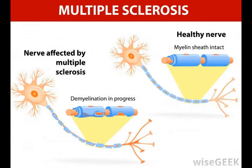Gray matter of the brain, in contrast, contains non-myelinated axons and capillaries. Messages are transmitted to different parts of gray matter in the brain through deep white matter. This area of the brain is very resilient and can adapt to damage by finding different routes that bypass the damaged areas of white matter.